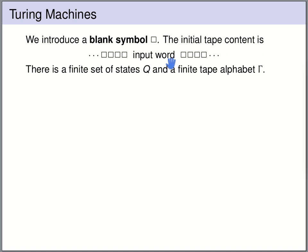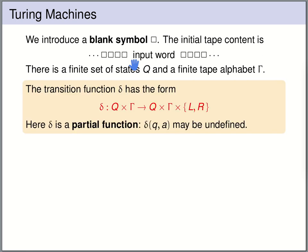The input word is written on the tape and the Turing machine is started with the read-write head on the first symbol of the input word. The transition function takes as input the current state and a symbol from the tape alphabet — the symbol currently under the read-write head — and it tells what state to switch to, what symbol to write on the tape, and whether to move the read-write head to the left or to the right.